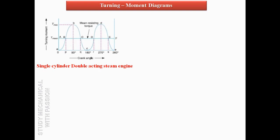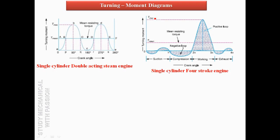For a single cylinder double-acting steam engine, the mean torque line represents the mean torque. Above the mean torque line is maximum torque and below is minimum torque. For a single cylinder 4-stroke engine, the strokes are intake, compression, working (expansion), and exhaust. The area below the mean line is negative torque; only the working/expansion stroke gives a completely positive torque region. Compression, intake, and exhaust strokes are majority negative torque.